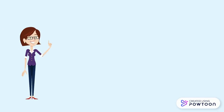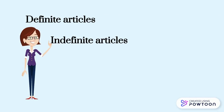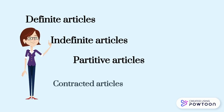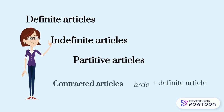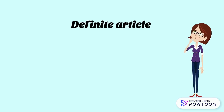In French, there are three types of articles: definite articles, indefinite articles, and partitive articles. There is also a subcategory of definite articles, the contracted articles, which consist of a combination of the prepositions à or de and the definite article. In this video, we are going to focus on the definite article.